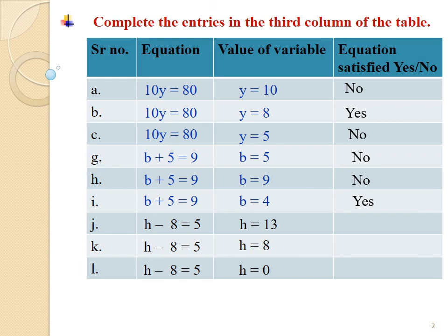Sum J: H minus 8 equals 5, where H equals 13. Let us write 13 in place of variable H and check whether LHS equals RHS or not. Writing 13 in place of H, we get 13 minus 8. Subtracting 8 from 13, we get 5. Since 5 equals 5, so we have to write YES. Thus, H equals 13 is the solution of H minus 8 equals 5.